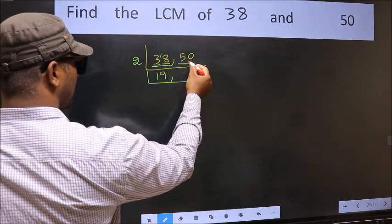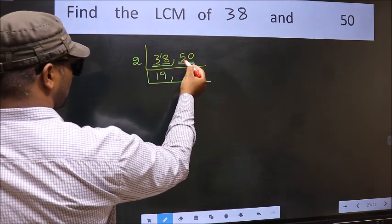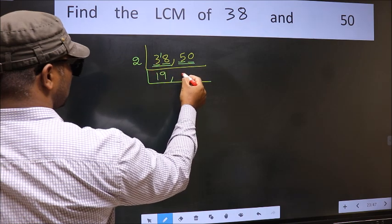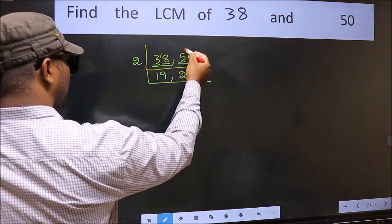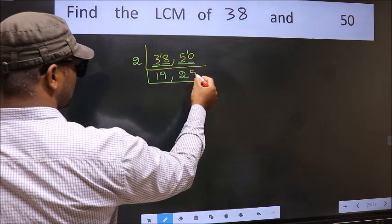The other number 50, last digit 0, so this is divisible by 2. First number 5, a number close to 5 in 2 table is 2, 2, 4. 5 minus 4 is 1, 1 carried forward 10. When do we get 10 in 2 table? 2, 5 is 10.